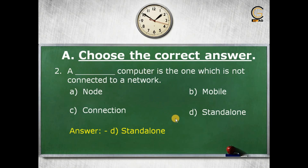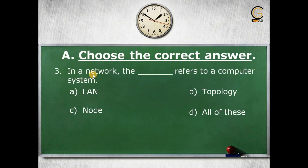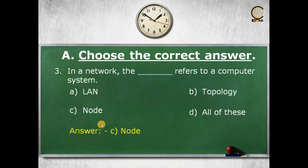Next question: in a network, the dash refers to a computer system. The options are: a) LAN, b) topology, c) node, d) all of these. The correct answer is c) node, as in a network the node refers to a computer system. Sometimes we also call a node a workstation.